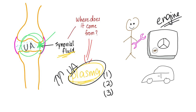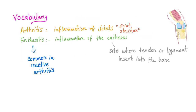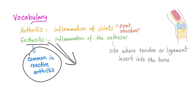Third, if you have septic arthritis of the knee, it can spread to the plasma — that's why septic arthritis is an emergency. Now let's talk about vocabulary. Arthritis is inflammation of joints or any joint structure. Enthesitis is inflammation of the enthesis — the sites where a tendon or ligament attaches to a bone. Enthesitis is common in reactive arthritis. An example is Achilles tendonitis.